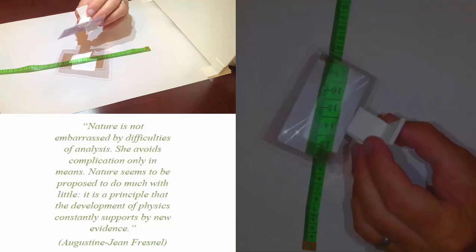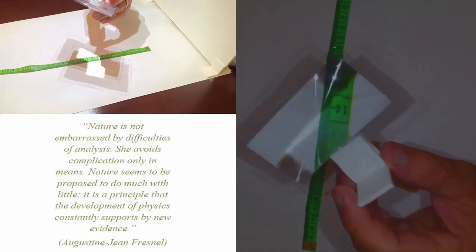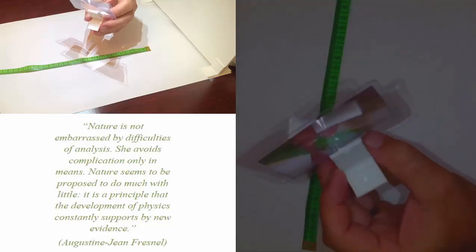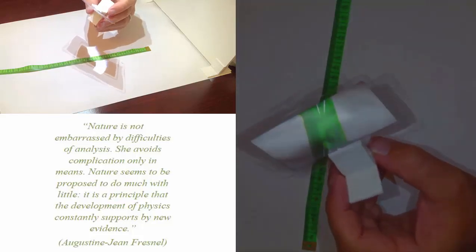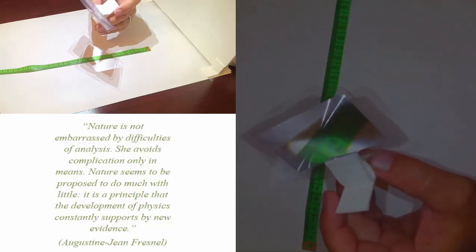What you can see is that this Fresnel lens consists of circular grooves etched on a thin plastic substrate. It is very lightweight and thin, can be manufactured in very large sizes at minimum cost.